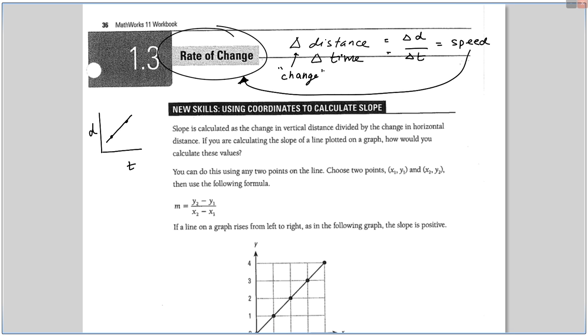What you would do is you would calculate the run, you would calculate the rise. The rise is delta d, the run is delta t. You would divide those two things, and you're looking for the slope. The slope is the rate of change. And if you're talking about distance and time, we call that rate of change speed. How fast is the distance changing with respect to time? That is speed.